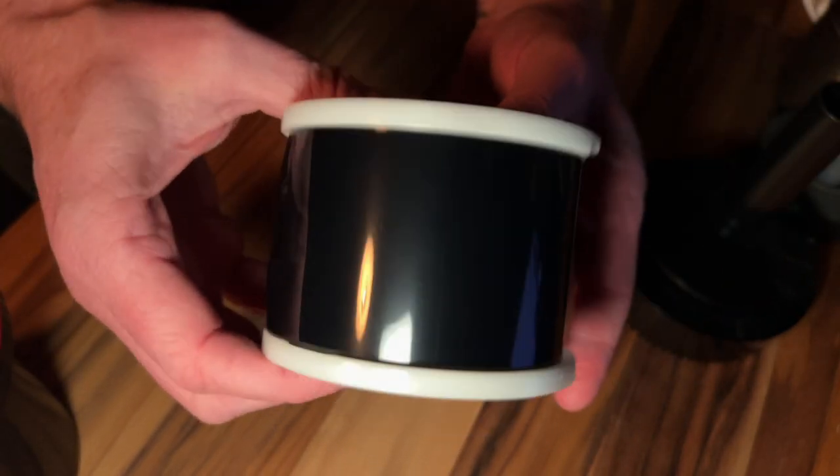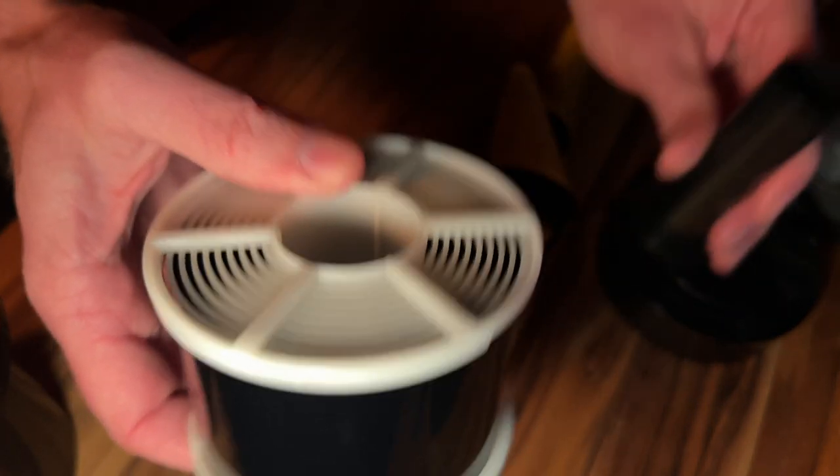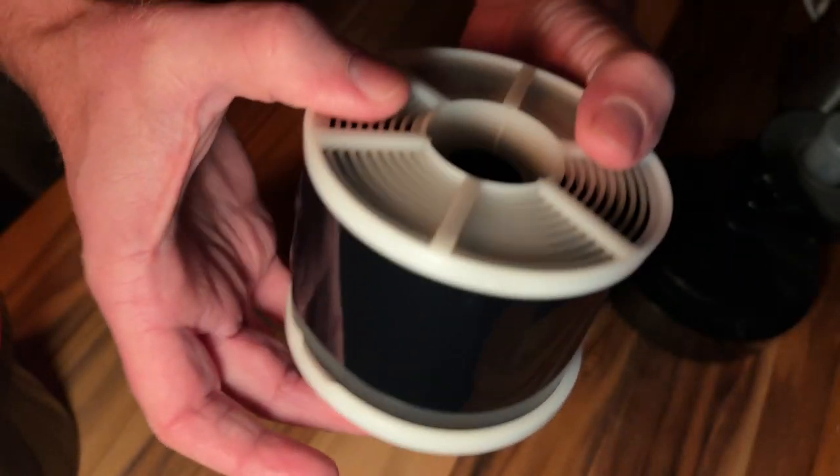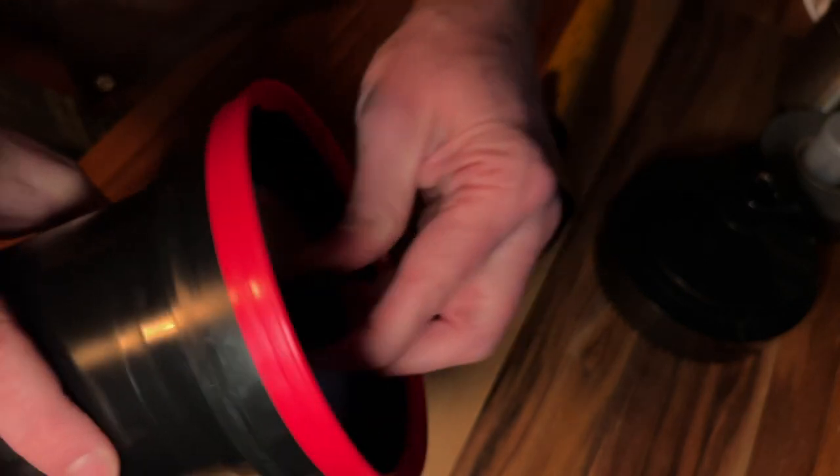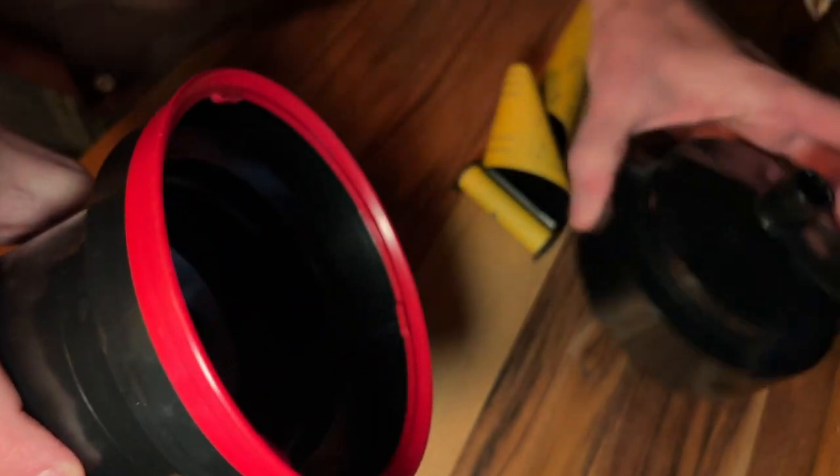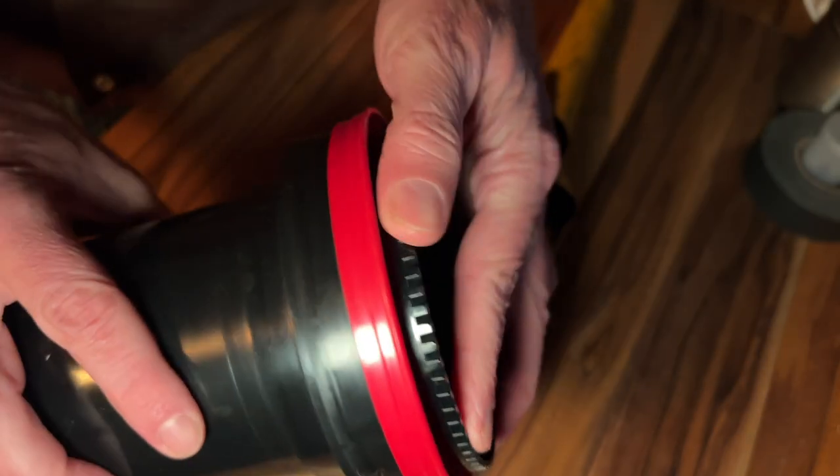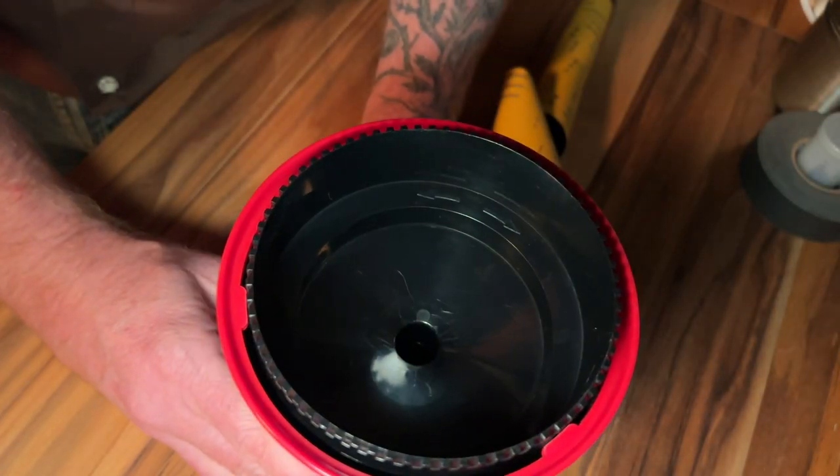With the film on the reel, the reel goes onto the tube and then both go inside the tank. Finally, the lid goes on top. Now we can open the changing bag.